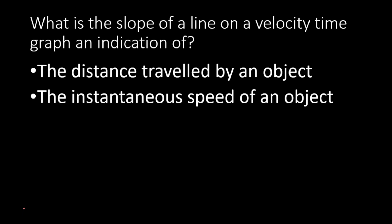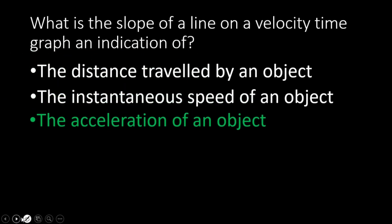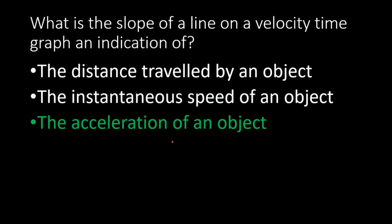Next question: what is the slope of a line on a velocity-time graph an indication of? The slope indicates acceleration. On a velocity-time graph, this slope represents acceleration.